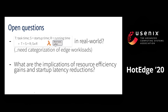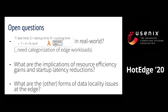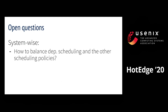Next, what are the implications of the performance improvement? For example, can we do more aggressive autoscaling at the edge given the lowered startup overhead? Can we run the application at a larger scale? How much savings on cost and power consumption can we achieve? Finally, are there any other forms of data locality issues and solutions for containers at the edge that need to be addressed? There are other system-wise open issues that this paper does not explore.